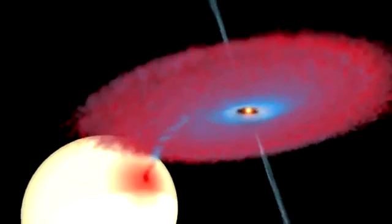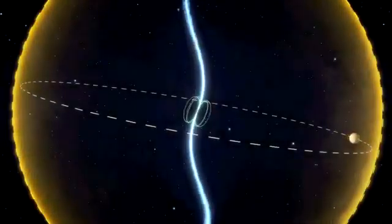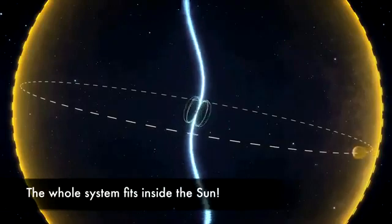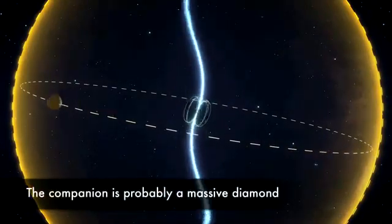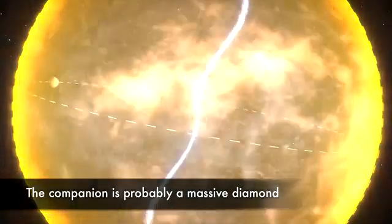The evolutionary history and amazing density of the planet all suggest it is comprised of carbon, i.e. a massive diamond orbiting a neutron star every two hours in an orbit so tight it would fit inside our own sun.